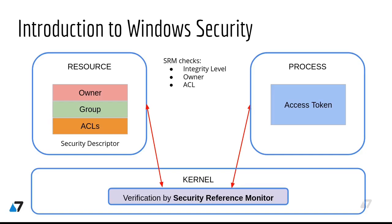How does the Security Reference Monitor work? There are a couple of steps SRM performs. First, it verifies the integrity level of the caller. The integrity level is a number assigned to both tokens and resources. If the integrity level of a process is lower than that of the resource, access is denied. Otherwise, SRM proceeds with checking the owner and access list of the resource.